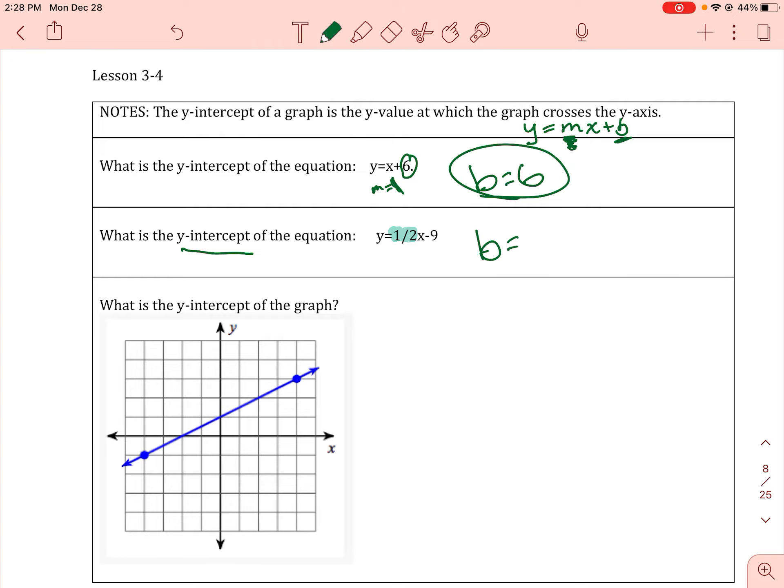So I have b is the number after x, which is negative 9. Since it's minus 9, minus means negative - they are the same. So when you see minus 9, that means your y-intercept is negative 9.